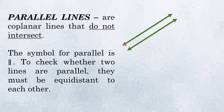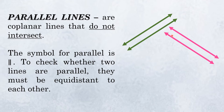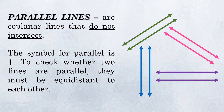Parallel lines look like this — two lines where the distance between them is the same throughout. The distance at the bottom is the same as the distance at the top. No matter how far you extend the two lines, they will never intersect or meet. They can be slanted, vertical, or horizontal.